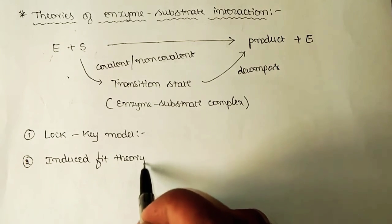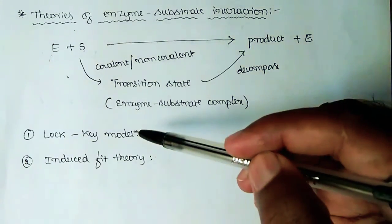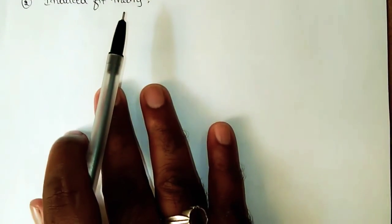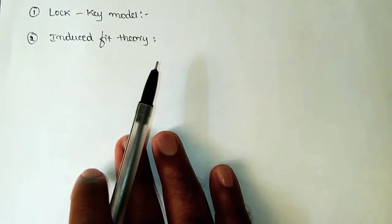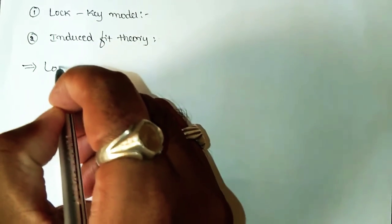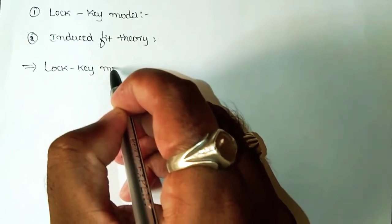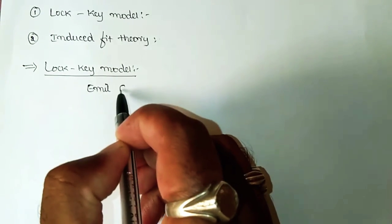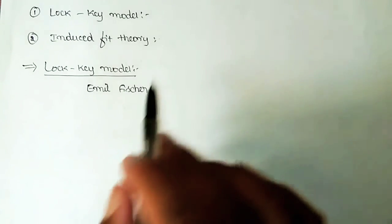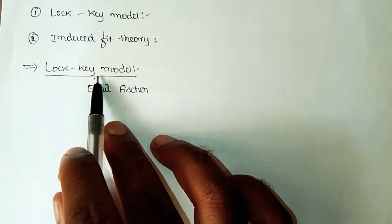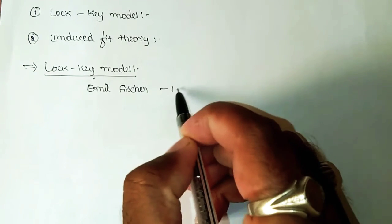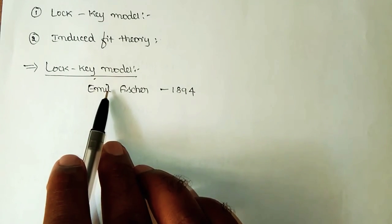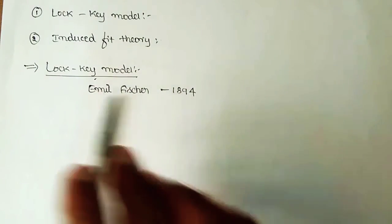We shall now learn about the details of both the lock and key model and the induced fit theory. The lock and key model was proposed by the scientist Emil Fischer, who proposed this theory of enzyme-substrate interaction in the year 1894.